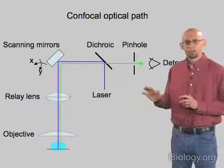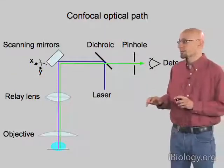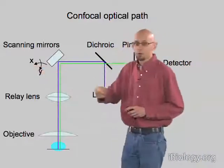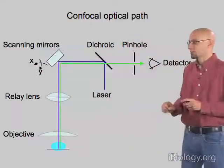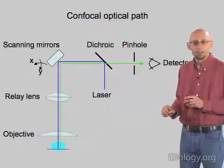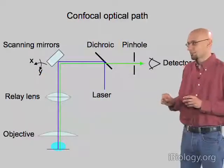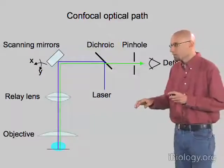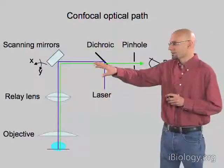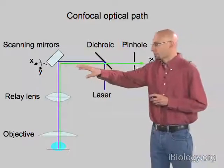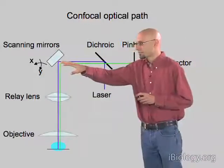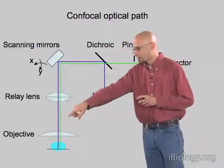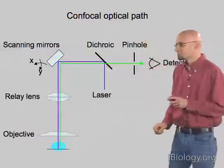Here's the optical path of the confocal microscope that allows us to do this scanning. The heart of it is this set of scanning mirrors, which allow us to rotate the angle at which the laser beam enters the objective, and thereby move the spot across the field of view, across our sample. We have a laser that enters our microscope, it's scanned by these scanning mirrors, which changes its angle so that once it's focused by the objective, the spot it illuminates in our sample changes.